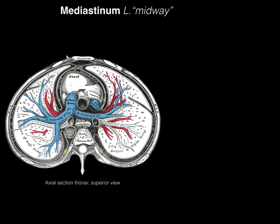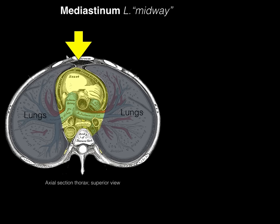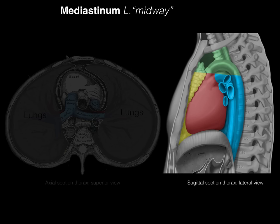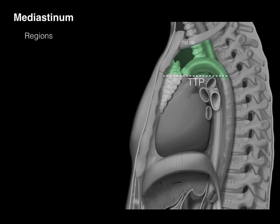The mediastinum means 'midway' in Latin. Here's a cross-section or axial section through the chest — the lungs fill the lateral spaces of the thoracic cavity, and midway between the lungs is this carrier known as the mediastinum. It is midway between the lungs side to side, and front to back it's between the sternum and the vertebrae.